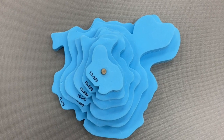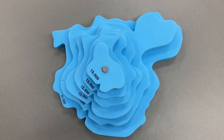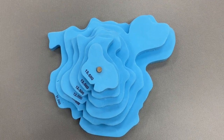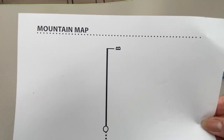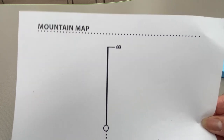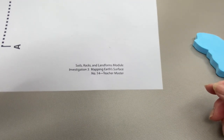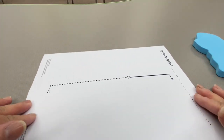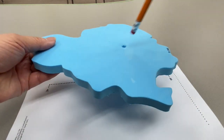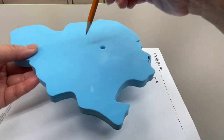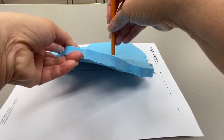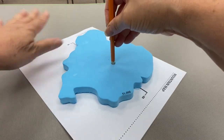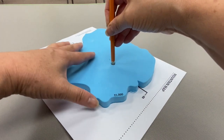If we view our model mountain from above, we can see how it resembles a topographical map. Now let's draw our own topographical map by using our mountain model. First, I'm going to take my sheet of paper titled Mountain Map, which is Teacher Master number 14, and I'm going to line up my first model piece with the hole over the circle on my paper and line up the notch with the line titled B.